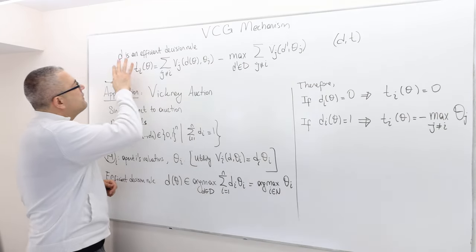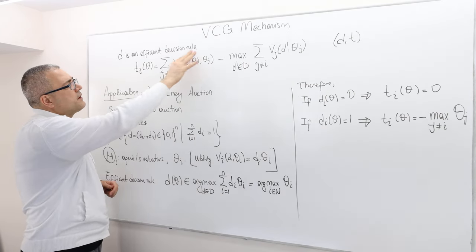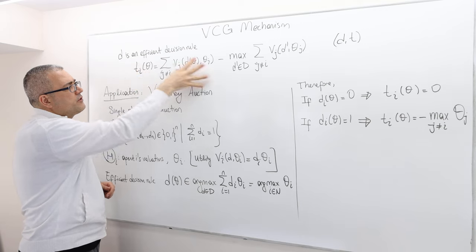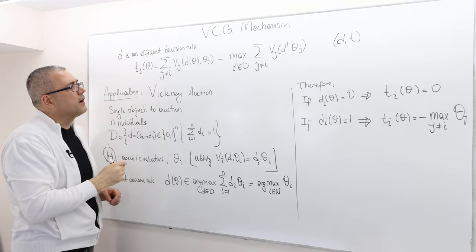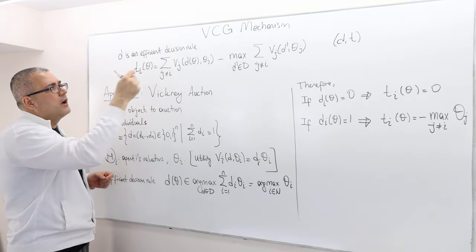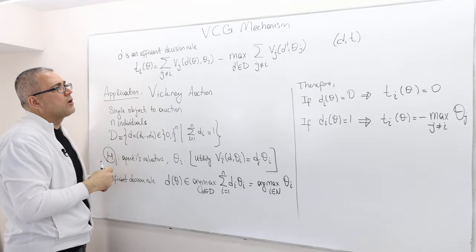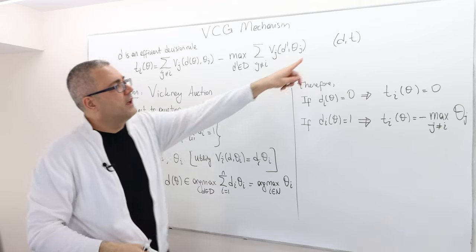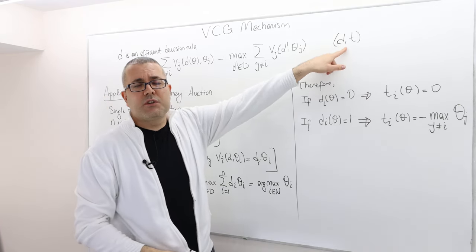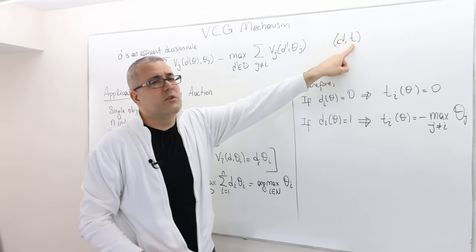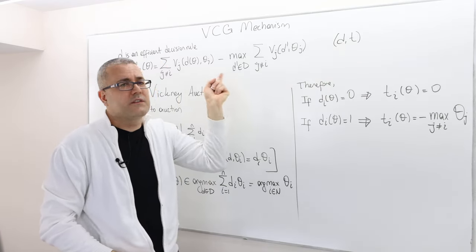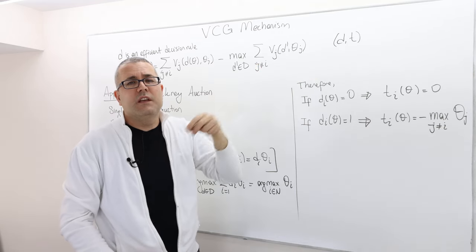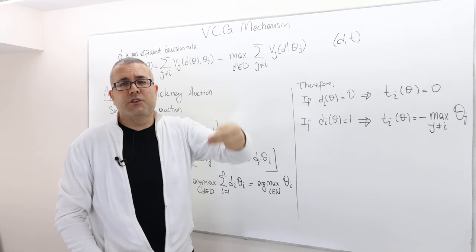If D is an efficient decision rule and this is the transfer function, well thanks to Groves and Clark, we know that the social choice function with this decision rule and with this transfer function is strategy proof.